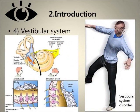The semicircular canals deal with different movements: up and down, side to side, and tilting from one side to the other. They all contain sensory hair cells that are activated by movement of the inner ear fluid. Vestibular disorders can cause dizziness and balance difficulties.